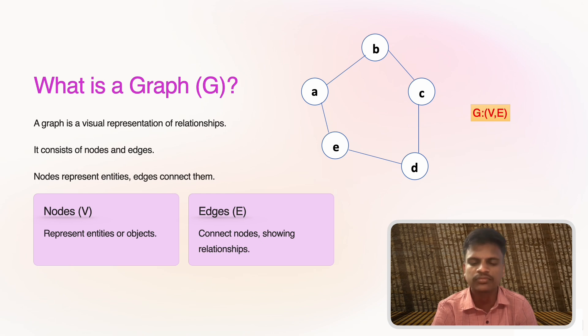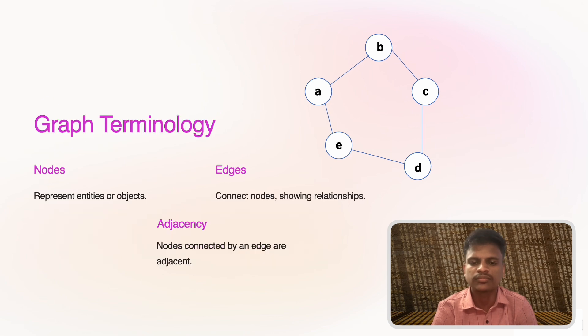Graph terminology: there are some important terms to know when working with graphs. Adjacency: two nodes are adjacent if they are directly connected by an edge. Paths and cycles: a path is a sequence of edges connecting nodes. A cycle is a path that starts and ends at the same node. These terms will help us describe various types of graphs more precisely.